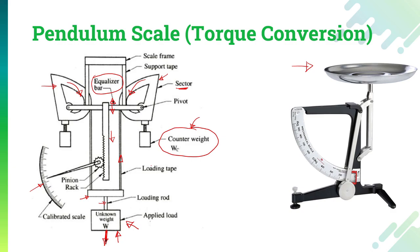So the pendulum scale works on the torque conversion principle: the unknown weight is converted into torque, that torque is balanced by the sector using the counterweight, the equalizer bar moves during balancing, and the rack and pinion calibrated scale shows the value of the force applied on the loading road. This is the end of this session where we learned three varieties of balancing scales and the pendulum scale. See you in the next lecture. Have a good day.